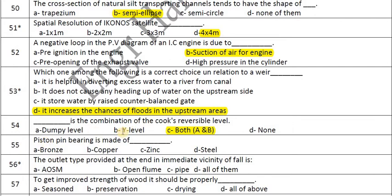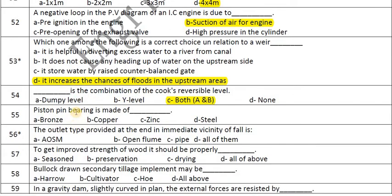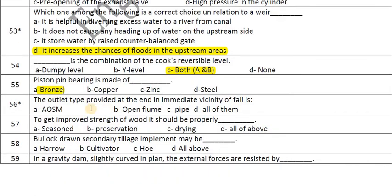Piston pin bearings are made of bronze. The outlet type provided at the tail end of an irrigation channel is an open flume. To get improved strength of wood, it should be properly seasoned, preserved, and dried — all of the above should be done to improve wood strength.